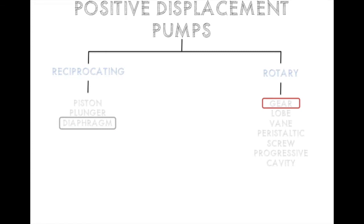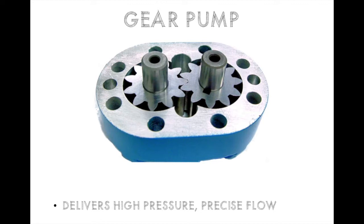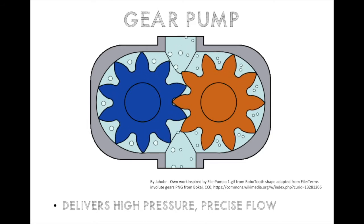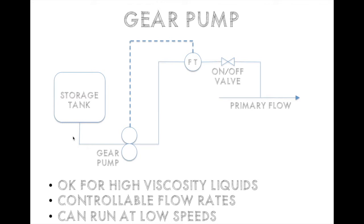The next pump is a gear pump, which delivers high pressure and precise flow. Liquid enters the pump head, travels along the outside of the gears, and as it arrives at the exit, the space between the teeth gets squeezed by the teeth of the opposite gear, producing a net flow. In a typical setup, a storage tank feeds a gear pump, which goes through a flow transmitter, through an on-off valve, and into the process. The flow meter tells the gear pump to move faster or slower. This is great for high or low viscosity liquids, is controllable to different flow rates, and can run at low speeds.